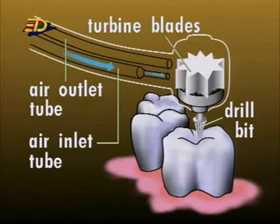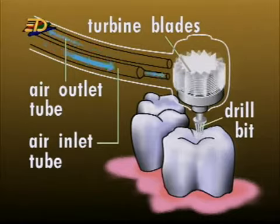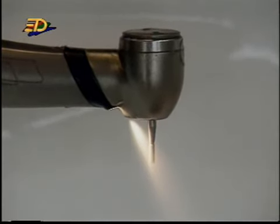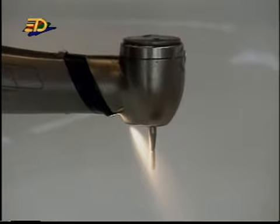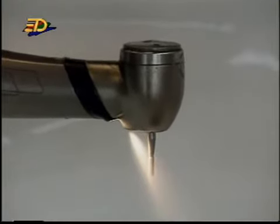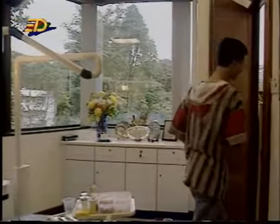Air flows into an air inlet tube. This air turns the turbine blades, which then causes a drill bit to turn thousands of times a second. The high-pitched noise is actually caused by the high-speed turning of the drill. What a relief for Stephen!